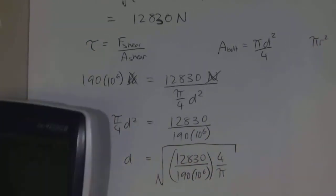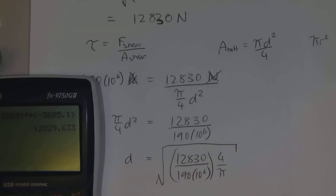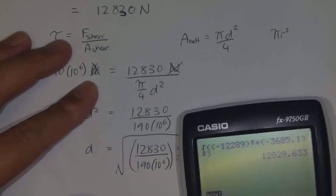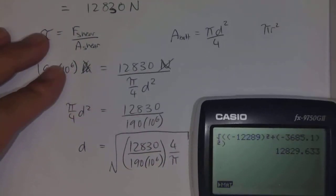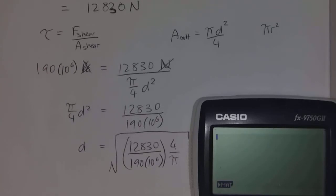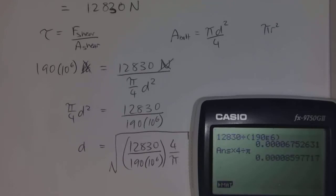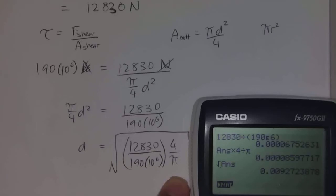We can make d by itself and calculate this value: 12,830 divided by 190 times 10 to the 6, multiplied by 4 and divided by pi, then take the square root of that number. From this we get 0.00927 meters, so that's about 9.3 millimeters.